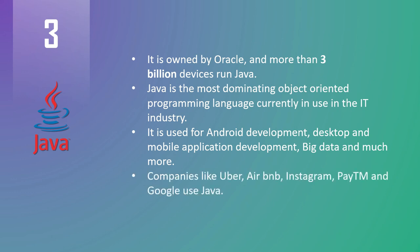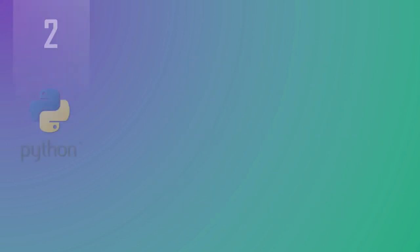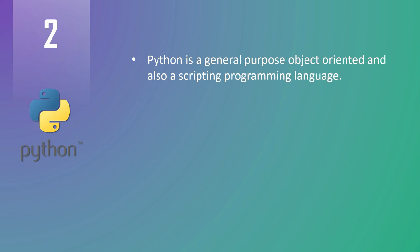Major leading tech giants like Uber, Airbnb, Instagram, Paytm, and Google use Java. The average salary of Java developers in the United States is about $100,000 US dollars per annum, and in India a Java developer can earn about 12 lakhs per annum.